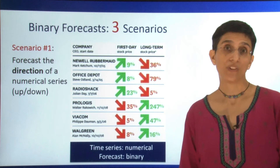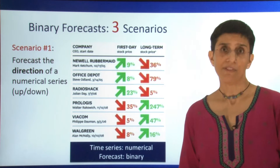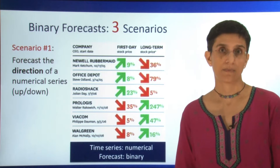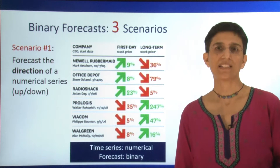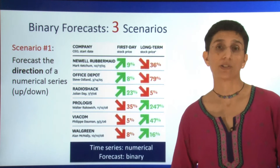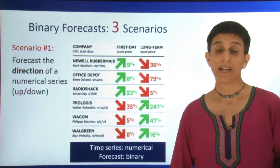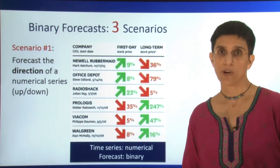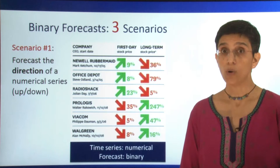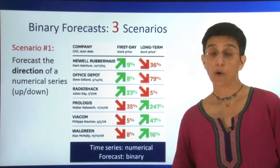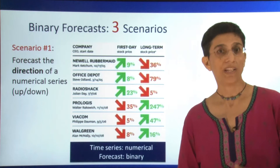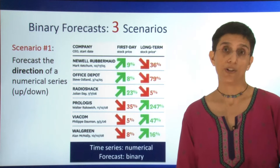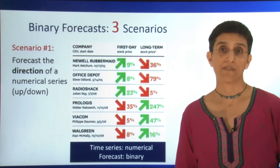When we're talking about the goals and the data, there are three very popular scenarios that we might have that lead to binary forecasts. The first scenario is when we want to forecast a direction of some numerical series. For example, we might have stock prices, and we're not trying to predict the stock price, but rather we're trying to predict whether tomorrow the price is going to go up or down. So in effect, our forecast is binary, but the data that we have are numerical — we might actually have the stock prices.